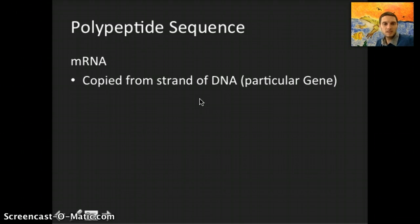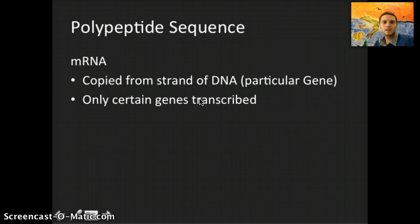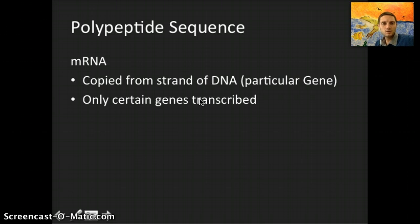A polypeptide sequence is the sequence of amino acids in a protein, and this is copied from a strand or part of DNA — more specifically, a particular gene. During protein synthesis, starting with transcription, a gene or section of DNA is used to make that protein. Only certain genes get transcribed — not all genes are transcribed — and additionally there's a lot of DNA that isn't used to make proteins, which was long considered 'junk DNA,' but new research suggests it may actually play a role in gene expression and the proteins that are transcribed.